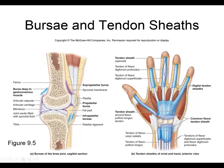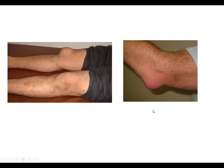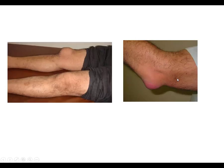Whether it's bursae or tendon sheaths, they are filled with synovial fluid, because they are made by the synovial membrane. Bursitis shows obvious inflammation. Treating it with anti-inflammatory drugs works sometimes. Steroids are used in rare cases. In some cases, aspiration or incision is needed — especially if there is blood, which takes much longer to be removed.